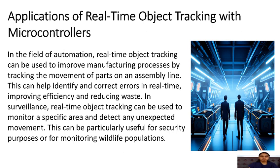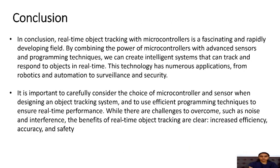In surveillance, real-time object tracking can be used to monitor a specific area and detect any unexpected movement. This can be particularly useful for security purposes or for monitoring wildlife populations.